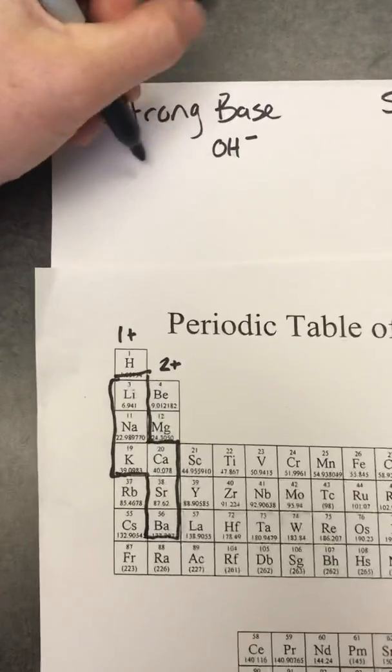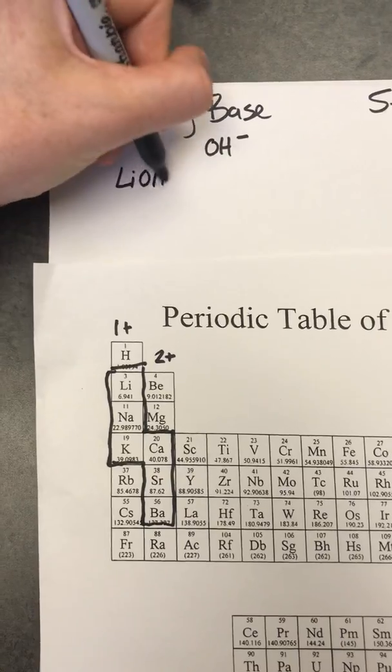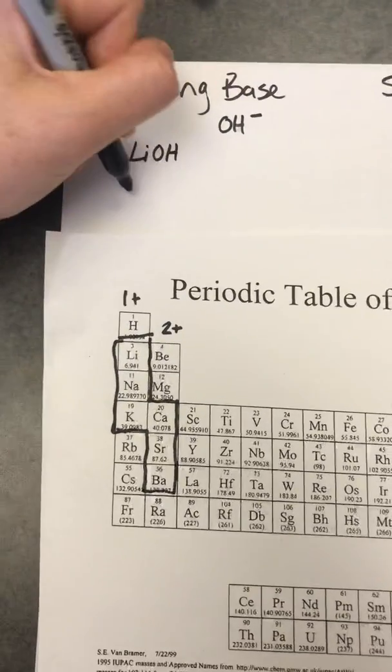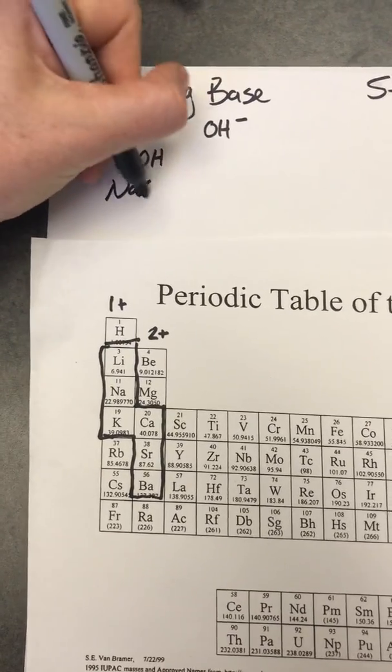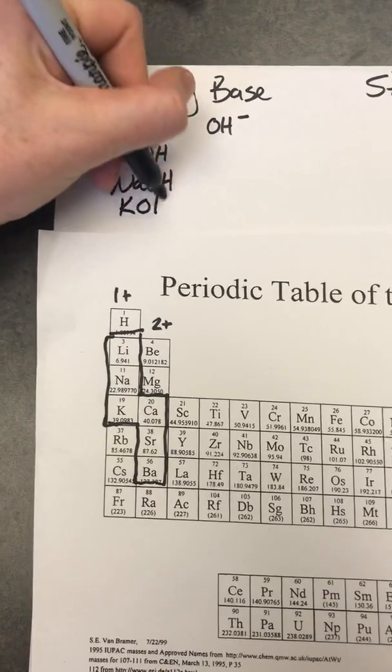Alright, let's start with lithium. Again, lithium would take on a 1-plus charge, so it's just going to form with 1 OH-. Sodium is the same, and potassium as well.